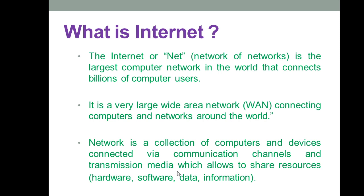A network is a collection of computers and devices connected via communication channels and transmission media, which is very important — without it you cannot access the internet. Just as an operating system is an interface without which you cannot work on a computer, similarly in computer networks, if you don't have the transmission media or hardware, you cannot connect to the internet. For example, to access the internet via telephone lines, you first need a modem to connect your PC to that network.